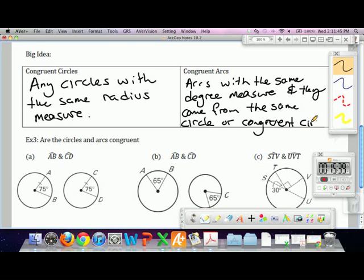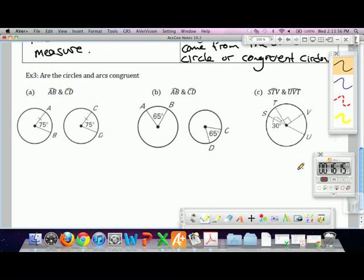It's not good enough for arcs to just have the same degree measure. They also have to come from either the same circle or congruent circles. Anyone want to take a stab as to why that second piece is very important for congruent arcs? Why it's not good enough just to have the same degree measure? Why the central angle isn't just enough? Looking at determining whether or not these arcs are congruent. In this case, is arc AB and arc CD congruent? They have the same degree measure. And they also, since these two circles have the same radius, that means the circles are congruent. So we have congruent circles and the same central angle. Yes, congruent arcs.